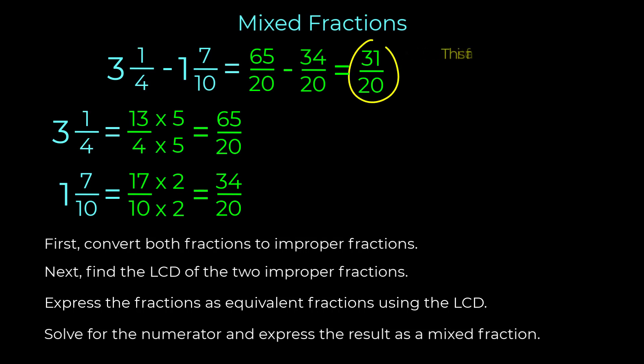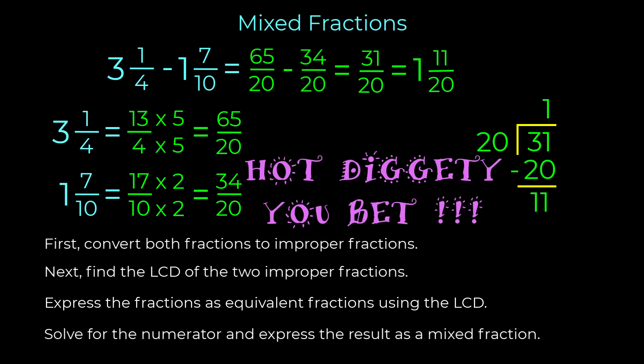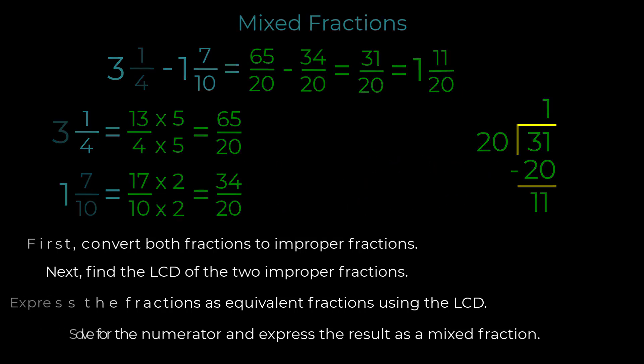The fraction is improper since the magnitude of the numerator is greater than the denominator. Use long division to express this as a mixed fraction. The answer is one and eleven over twenty. Did you get that right? Hootiggity! You bet! Wonderful!